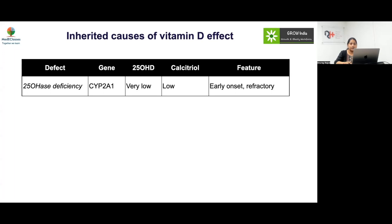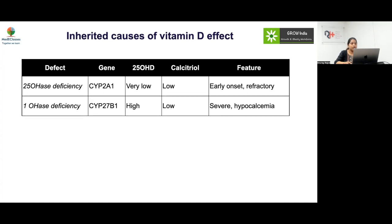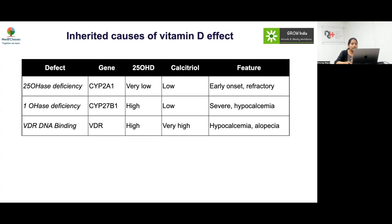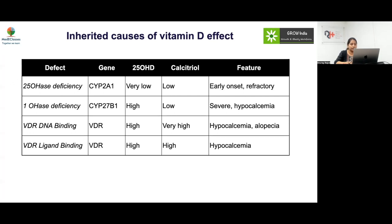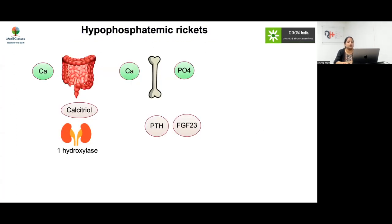To summarize inherited vitamin D disorders: 25-hydroxylase deficiency (CYP2R1 mutation) shows very low 25-OHD and low calcitriol. One-alpha hydroxylase deficiency (CYP27B1 mutation) shows high 25-OHD but very low calcitriol, presenting with severe hypocalcemia and seizures. VDDR2a (DNA-binding defect) has high 25-OHD and high calcitriol with severe hypocalcemia and alopecia. VDDR2b (ligand-binding defect) similarly has high 25-OHD and high calcitriol with hypocalcemia.